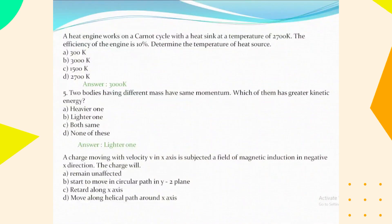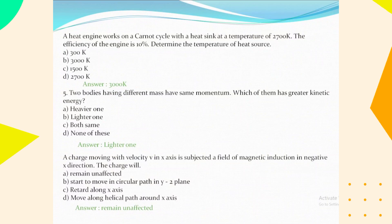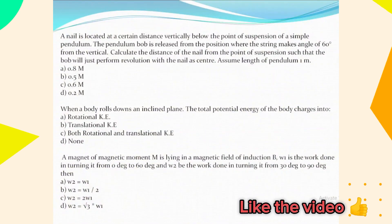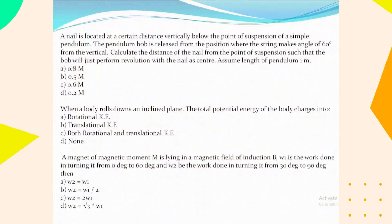A charge moving with velocity v in the x-axis direction is subjected to a field of magnetic induction in the negative x direction. The charge will remain unaffected because it is affected only by the electric field. A nail is located at a certain distance vertically below the point of suspension of a simple pendulum. The pendulum bob is released from a position where the string makes an angle of 60 degrees from the vertical. The distance of the nail from the point of suspension such that the bob will just perform a full revolution about the nail as center, assuming pendulum length of 1 meter, is 0.8 meter.